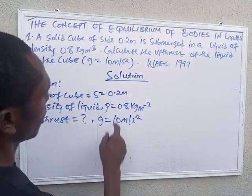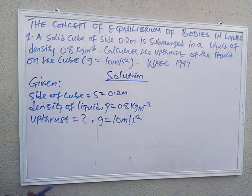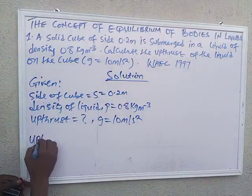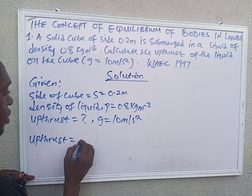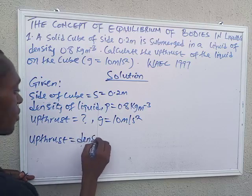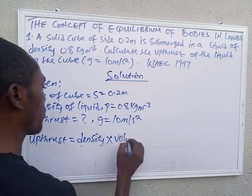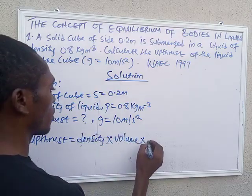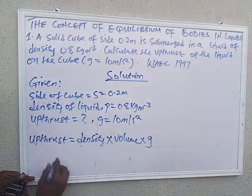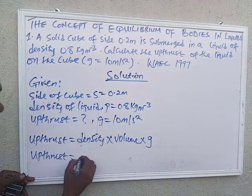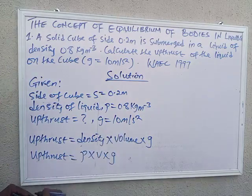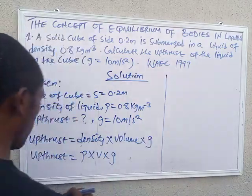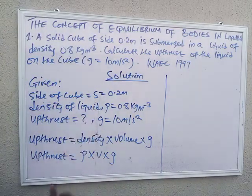So we have to calculate this now. The upthrust is given by the formula: upthrust equals density (rho) times volume (V) times G. Now if you look at this question, we don't have volume directly given, but we can get the volume.